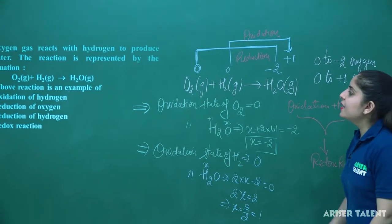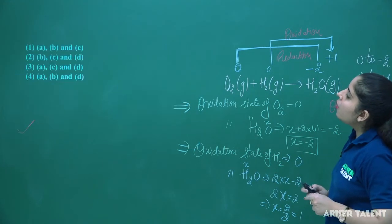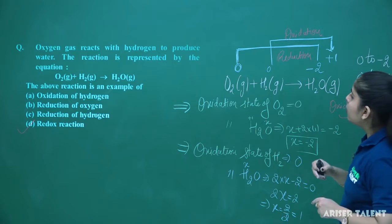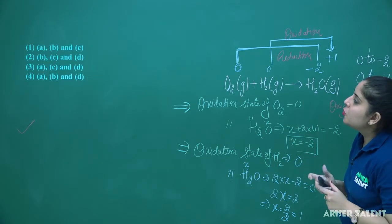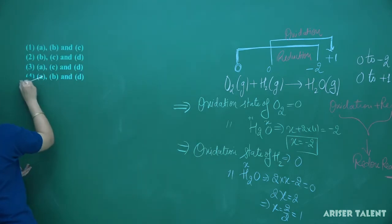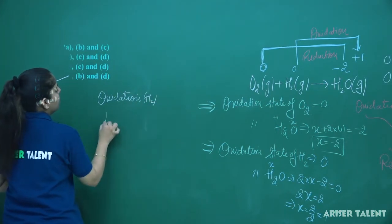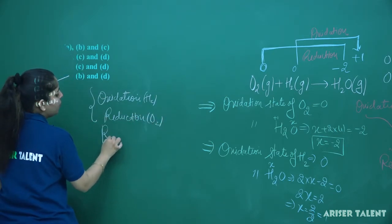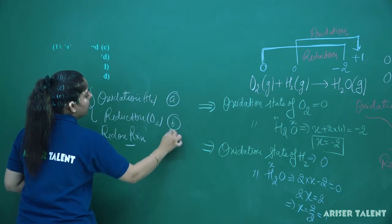Checking the options: A, B and D are correct because oxidation of hydrogen is taking place and reduction of oxygen is taking place. Option number 4 is correct because three phenomena are occurring here — there is oxidation of H2, there is reduction of O2, and both are taking place simultaneously. So we say it is a redox reaction. Options A, B and D are correct.